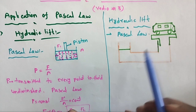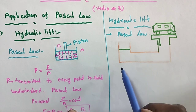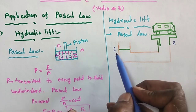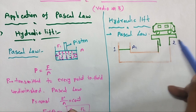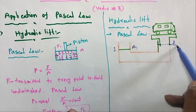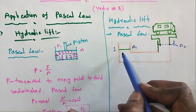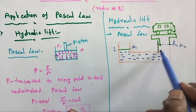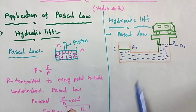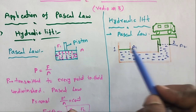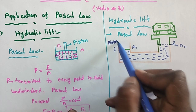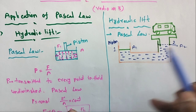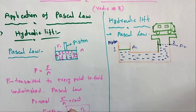In this hydraulic lift, here is the diagram. The hydraulic lift consists of two pistons: the first piston has area A1, and the second piston has area A2. The setup is filled with liquid or fluid. The cross-sectional area of the first piston is A1 — very small — and the second piston has area A2, which is very large.